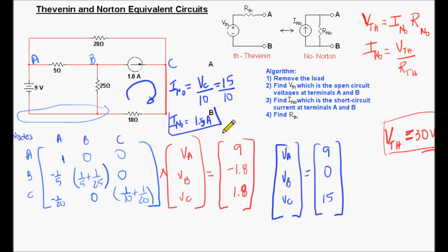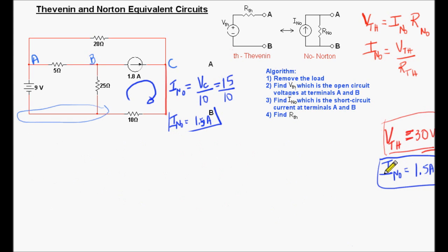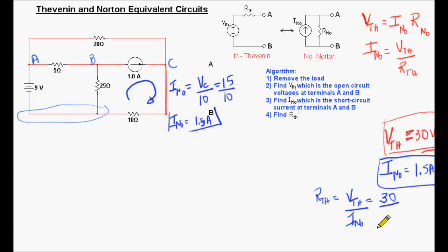We now have V_Thevenin and I_Norton, so it's straightforward to find R_Thevenin — which equals R_Norton. R_Thevenin = V_Thevenin / I_Norton = 30V / 1.5A = 20 ohms.